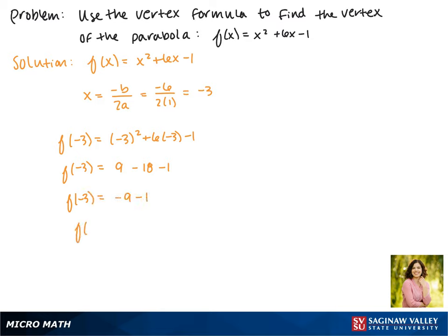Minus 1 makes the y value of our vertex -10. So the vertex of this parabola is the point (-3, -10).